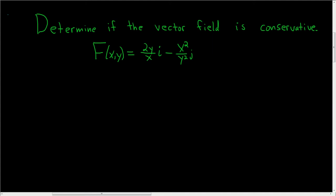Determine if the vector field is conservative. Solution: The first thing we want to do is rewrite F. So F(x,y) can be written as (2y/x)i plus (-x²/y²)j.